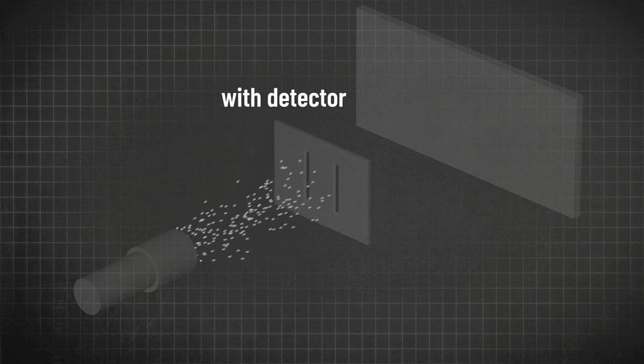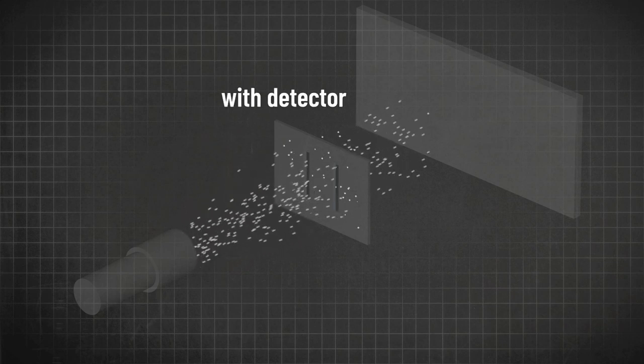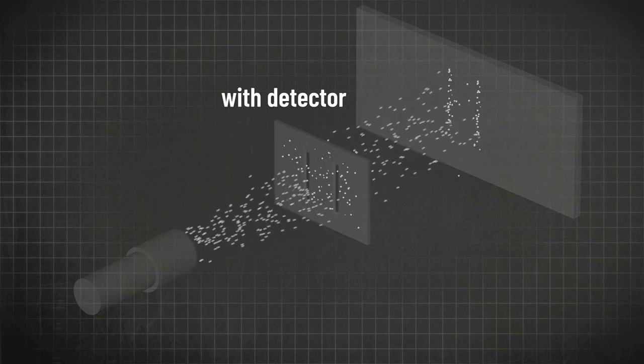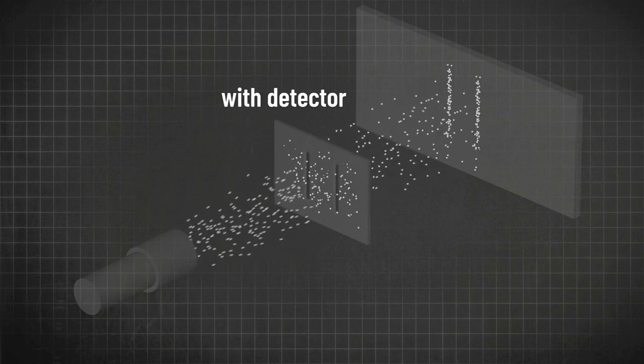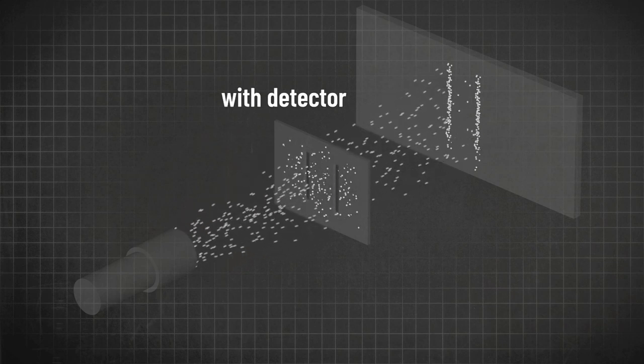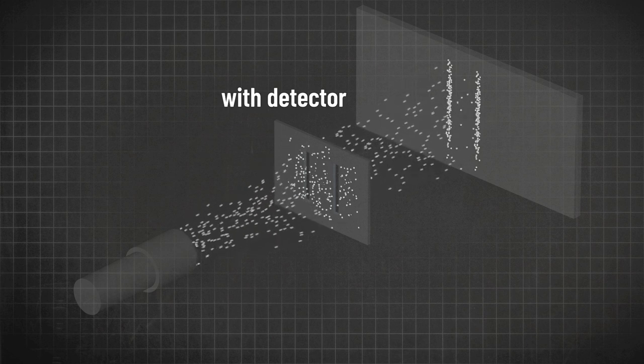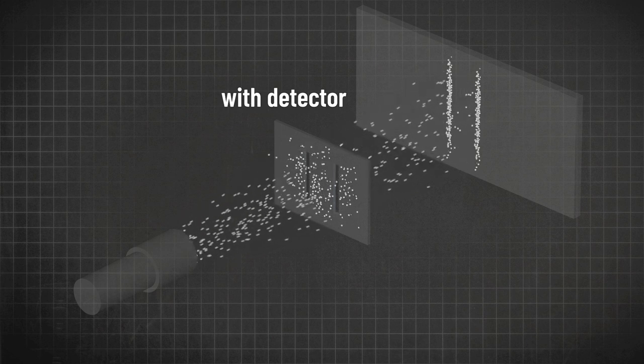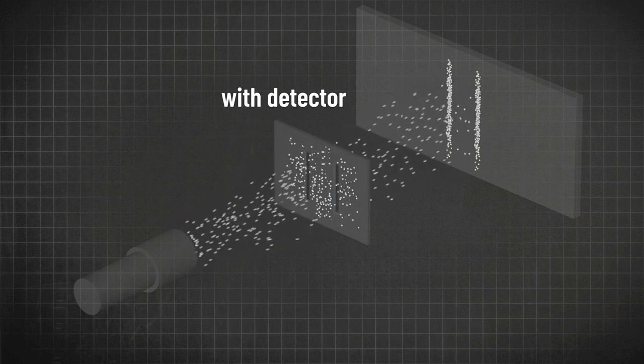Here's one more twist. If you put a detector on the two slits to detect which side the electron is going through, you end up getting just those two lines — you don't get the interference pattern anymore. Your act of measuring it affects the result of the experiment.